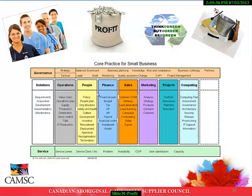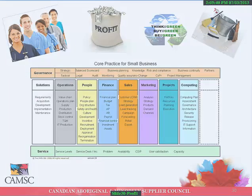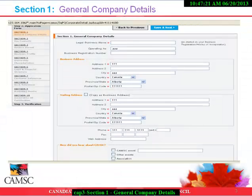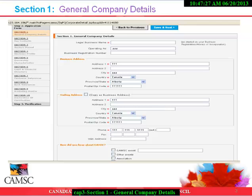There are just 10 sections to completing your supplier application online. Section 1: General Company Details. This section covers company details such as your legal business name, your complete mailing address, phone and fax numbers, and your website address.